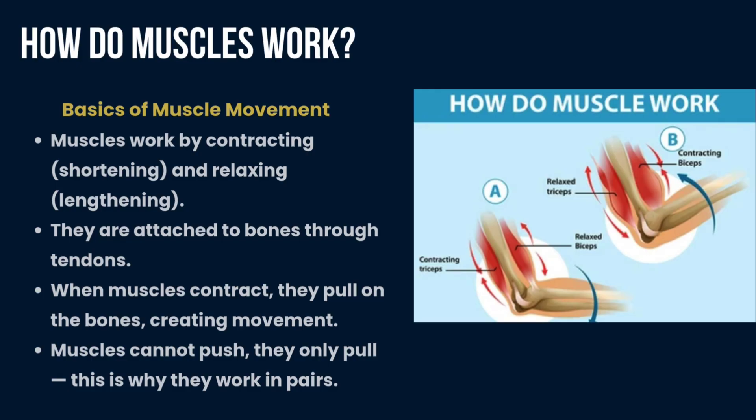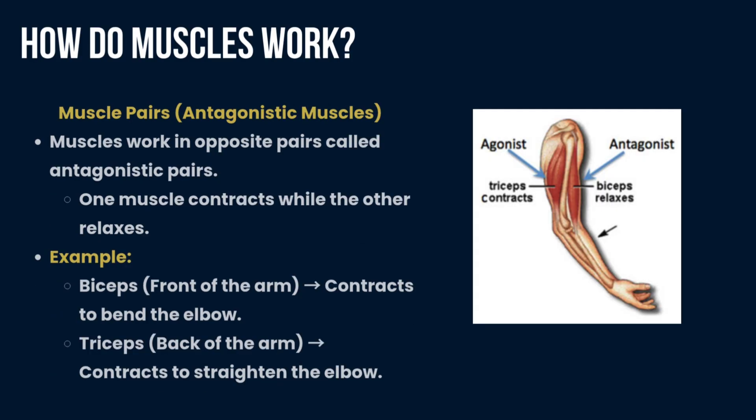Next, talk about how muscles work. Basic muscle movements: muscles work by contraction, which is shortening, and relaxation, which is lengthening. They are attached to bones through tendons. When muscles contract, they pull the bones, creating movement. Muscles cannot push — they only pull, which is why they work in pairs.